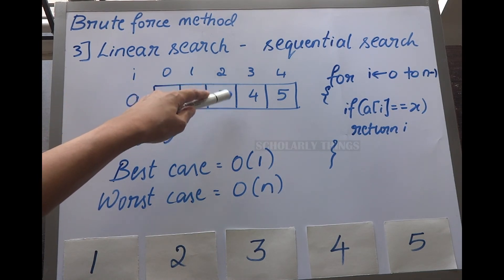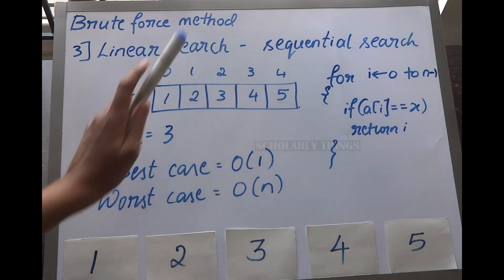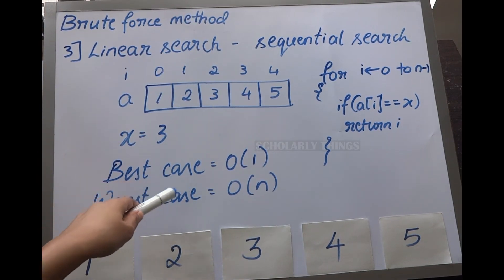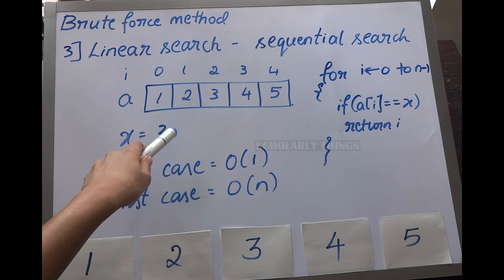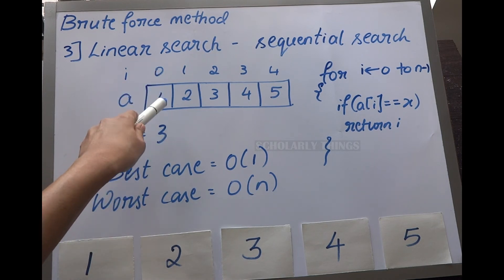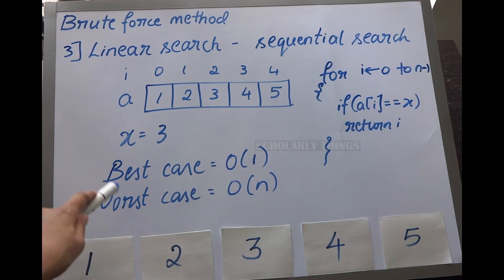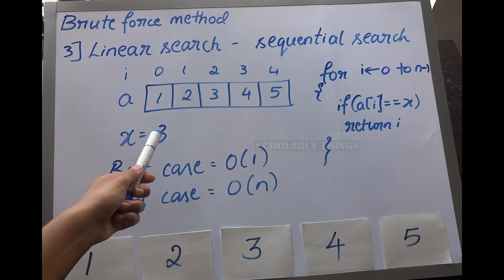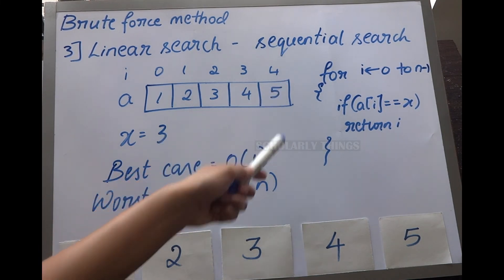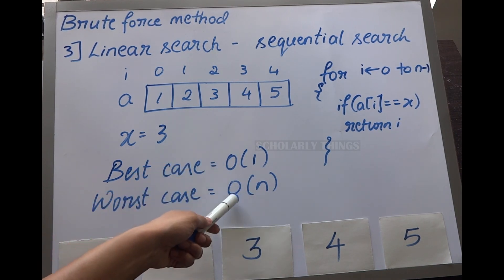The position of element 3 is 2. In the best case scenario, if the element to be found is in the first place, the time complexity is O(1). In the worst case scenario, if the element is in the last position, the time complexity is O(n).